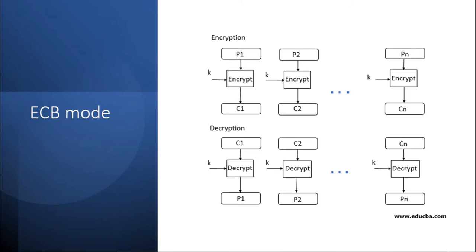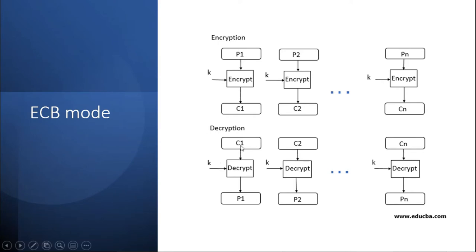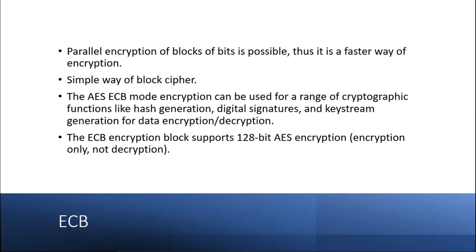In ECB mode, you have plaintext blocks P1, P2 up to Pn, and you have key K. The same key is used to encrypt each block individually, giving ciphertext C1, C2, and Cn. On the other hand, when decrypting, you use the same key and take each ciphertext block, decrypt it using K, and get back the plaintext blocks P1, P2, Pn.